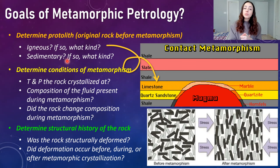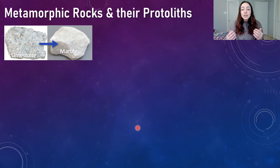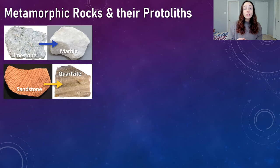Let's start with protoliths — how do we determine a metamorphic rock's protolith? In many cases it's straightforward. Marble is the metamorphic rock that forms when limestone undergoes metamorphism. Marble's composition is completely calcitic — its calcite grains have recrystallized to form a harder version — and limestone is also composed of calcite (calcium carbonate), so the connection is clear. Likewise, quartzite typically has a sandstone protolith because quartzite is dominated by quartz, which is common in sandstone.